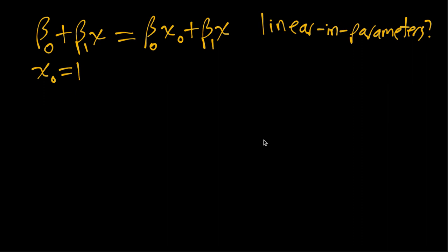So in this case the two weights, the linear combination weights are x naught and x. And we just have a linear combination of beta naught and beta one. So this is indeed linear in parameters.